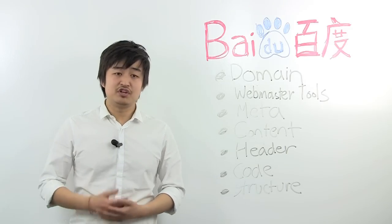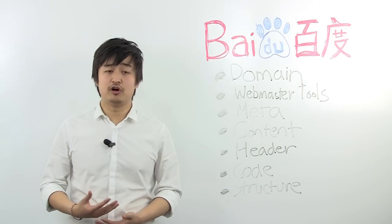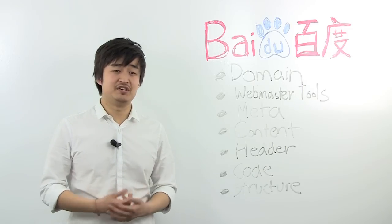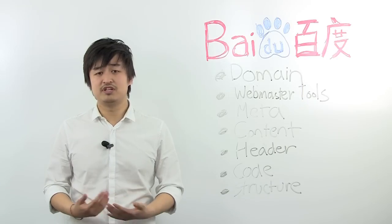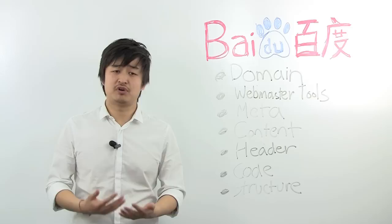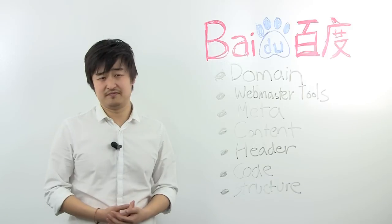Next up is Meta. Description and title is the same. They're very important. Make sure they're optimized for each page, they're unique, etc. The key difference here is that Baidu still reads meta keywords. So make sure this is present on your website, optimized for the keywords you're targeting for those specific pages.